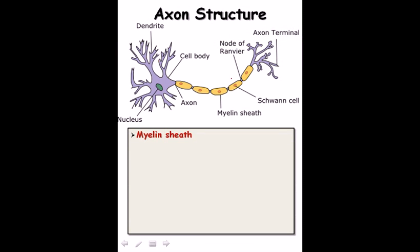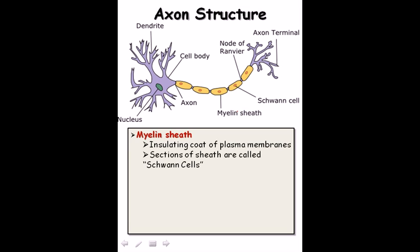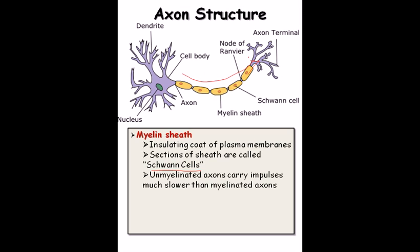Now, the axon structure is made up of several different regions. One is the myelin sheath, a yellow-colored insulating coat of the plasma membrane of the axon. The sections of the sheath are called Schwann cells, named after their discoverer, Schwann. The myelin sheath insulates the axon and helps in transferring impulses from the cell body toward the axon.